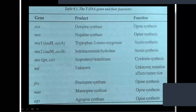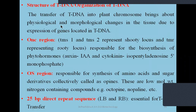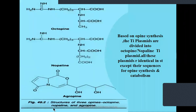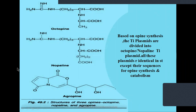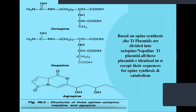There is also TML, whose product is unknown but unknown mutation affects the tumor size. In the Ti plasmid, very rarely found are FRS (fructopine synthase), MAS (monopine synthase), and AGS (agropine synthase), all responsible for opine synthesis. For the structure of T-DNA organization, you just need to mention the onc region, the OS region, and the 25 base pair direct repeat sequences. The three opines are octopine, nopaline, and agropine, which are produced by the T-DNA when it integrates into the plant genome.